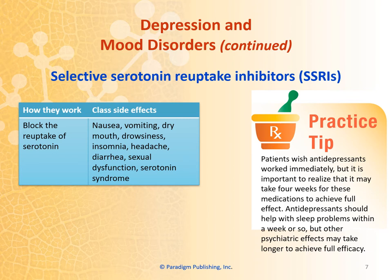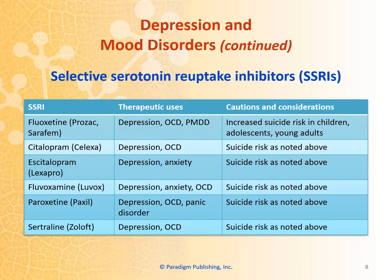Patients wish antidepressants worked immediately, but it's important to realize that they may take four weeks for the medication to achieve the full effect. Antidepressants should help with sleep problems within a week or so, but other psychiatric effects may take longer to achieve full efficacy. Drugs classified as SSRIs include fluoxetine or Prozac, citalopram, escitalopram, fluvoxamine, paroxetine, and sertraline. These are all really common SSRIs and they usually work around the same way. Their therapeutic uses include depression, OCD, and some also include anxiety.